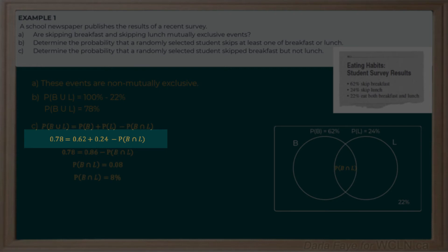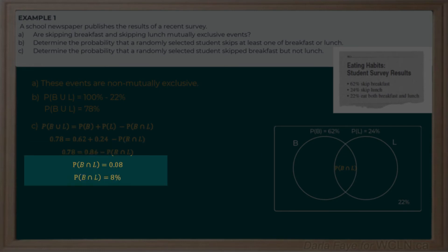Simplifying the right-hand side by adding those two values, and rearranging to solve the equation, we find that the probability of skipping both breakfast and lunch is 0.08, or 8%.